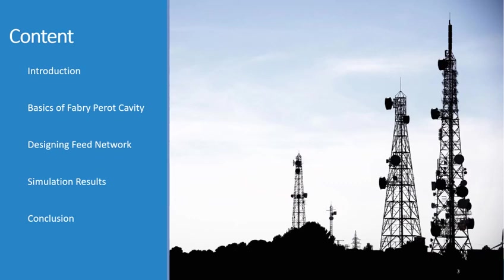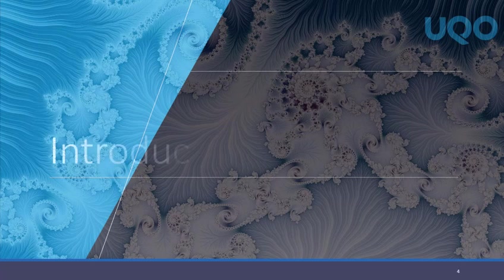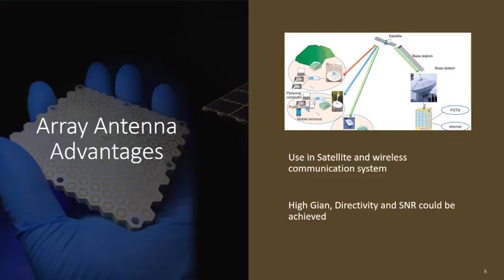First, introduction. In today's wireless communication systems, we commonly rely on array antennas. Why? Well, they're essential for amplifying signal to compensate for signal path losses and also losses that are caused by interference from the atmosphere.